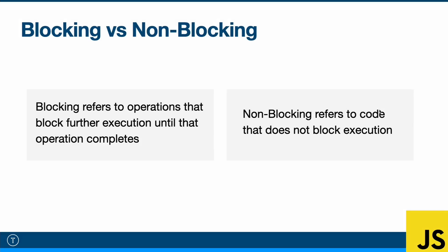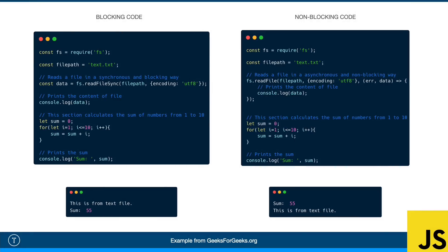To make this a bit more clear, I want to show you a real world example. This is actually Node.js — we're using the FS module, which is the file system module, so we can read and write to files. I wanted to show you this example because there are two methods that do the same thing, but one does it asynchronously and one does it synchronously. readFile is a method on the FS object that reads a file in an asynchronous, non-blocking way. readFileSync is the synchronous version, and it works in a blocking way.